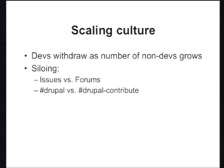The second side of this is scaling the culture of the project. When it's 10 people around pizza and beers, it's really easy to keep the same culture and have similar values. But in Drupal it's become harder and harder to maintain that culture. We have two very distinct separate places where people go to talk: the issue queue, where developers go to talk to each other, and the forums, where users go to talk to each other. Developers pull back because they can't take it when there are all these new people who haven't learned the community norms, so they withdraw as a matter of self-protection because they just can't deal with the noise.